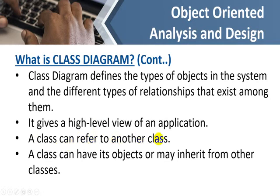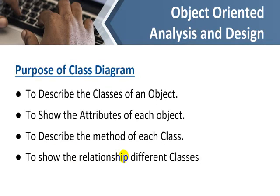A class can refer to another class, be related to another class, have its own object, or may inherit from other classes — child classes can inherit from the parent class. The class diagram is used to describe the classes of an object, show the attributes of each object, describe the methods of each class, and show the relationship between different entity classes. It gives us a complete overview of the methods, classes, and attributes being used.